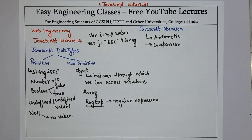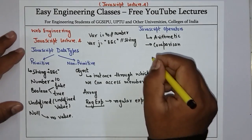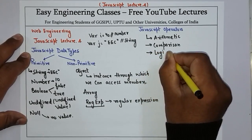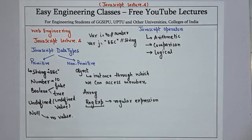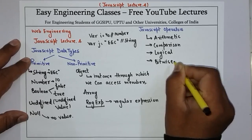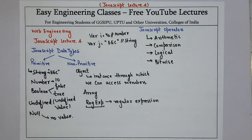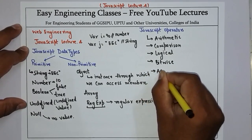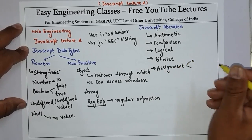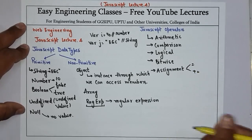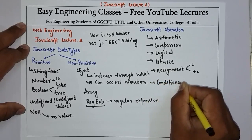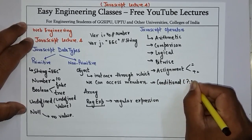In comparison operators you have equals, less than, less than or equals to, greater than, greater than or equals to, and so on. Then we have logical operators, which include logical AND, logical OR, and logical NOT. Then we have bitwise operators: bitwise AND, bitwise OR. Then we have assignment operators, which can be single equals or plus-equals and so on. Then we have the conditional operator.